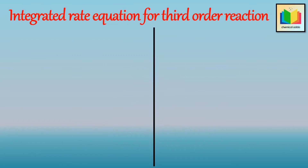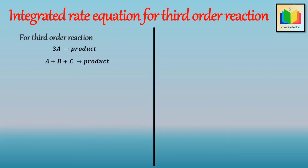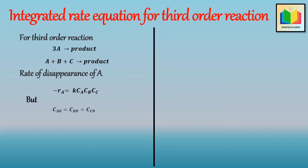Now let's derive the integrated rate equation for third order reaction in terms of conversion. For the reaction 3A → product or A + B + C → products, where the concentration of all three reactants is the same, the rate of disappearance is −rA = k·CA·CB·CC. Since initial concentrations are equal, we write −rA = k·CA³.